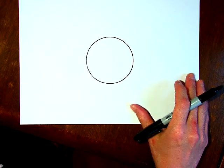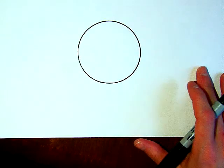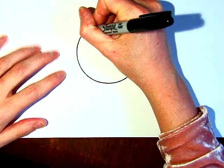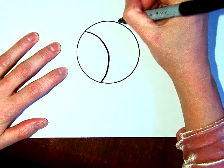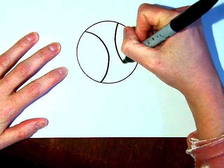So start with your circle, and then from there we're going to make the stitches. So for the stitches, you're going to do a curve around like that, and then another curve the opposite way.